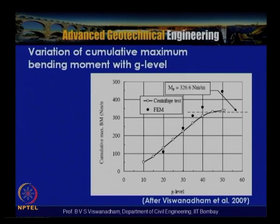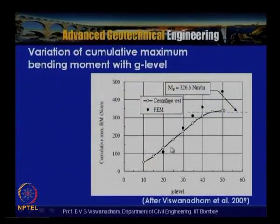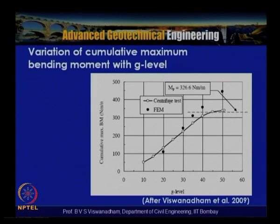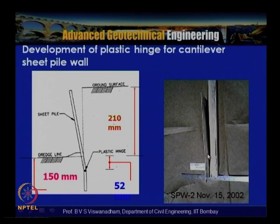The variation of cumulative maximum bending moment with g level is plotted; with increasing g level the bending moment increases, consistent between centrifuge measurement and FEM. The plastic moment capacity of 326.6 Newton-meter per meter is indicated, showing that somewhere between 35g and 45g the wall attained plastic hinge inception. Post-investigation revealed that the plastic hinge formed 52 mm below the dredge line, from a total embedded depth of 150 mm — corroborated by the sharpening of the bending moment profile.